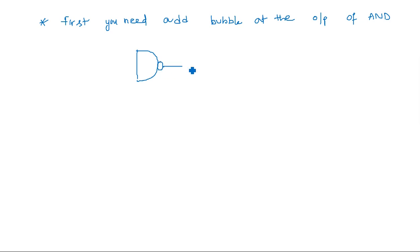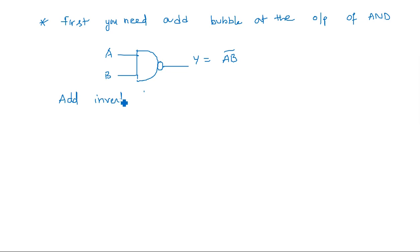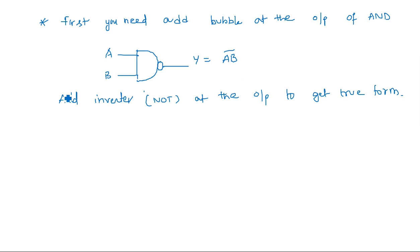We are taking a bubble at the end without changing the input side. Inputs are still A and B, but the output is now AB-bar — the complemented form. Since we need the original output Y = AB, we need to add an inverter (NOT gate) at the output to get the true form. So the second step is to add a NOT gate at the output to restore Y = AB.